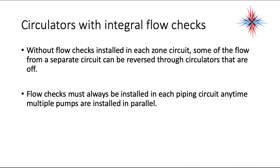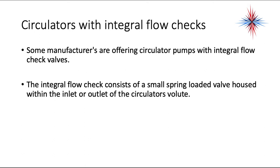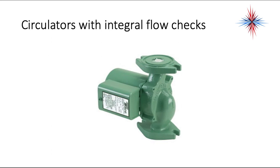Flow checks must also be installed. Some circulators come with integral flow checks. Without flow checks in each zone circuit, flow from one active circuit can reverse through circulators that are turned off. Flow checks must always be installed in each piping circuit whenever multiple pumps are used. Some manufacturers integrate flow checks directly into the circulator — a small spring-loaded valve housed within the inlet or outlet of the volute. When the circulator runs, flow is normal; when off, it prevents backflow from other zones.